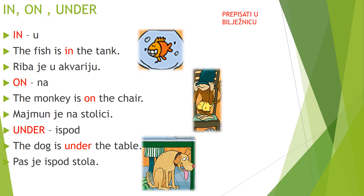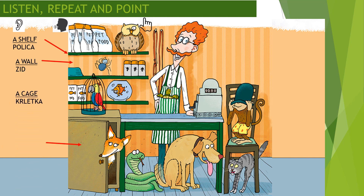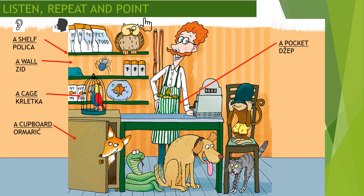A sada možete pauzirati filmić i prepisati sve ovo u bilježnicu. And now, listen carefully, repeat and point. A shelf. A wall. A cage. A board. A pocket. A tank. A chair. A table.